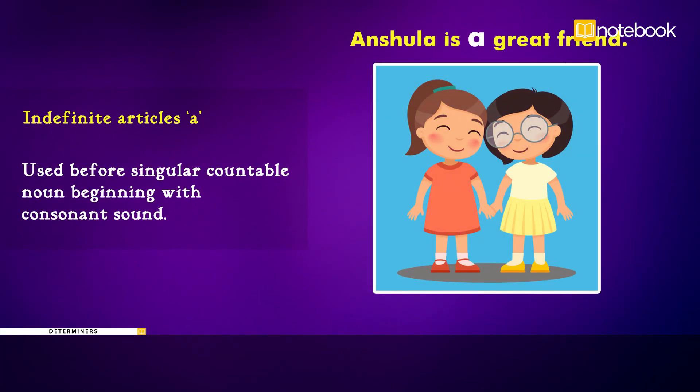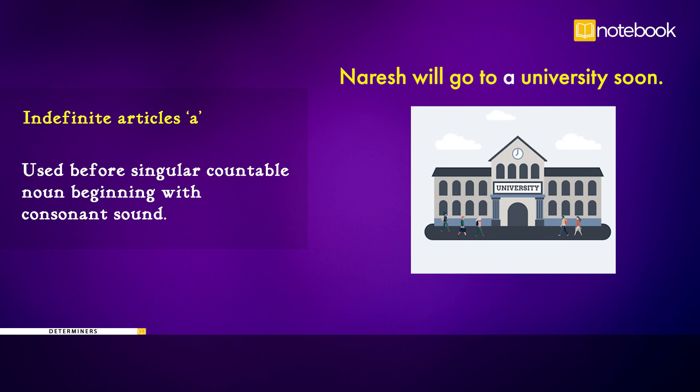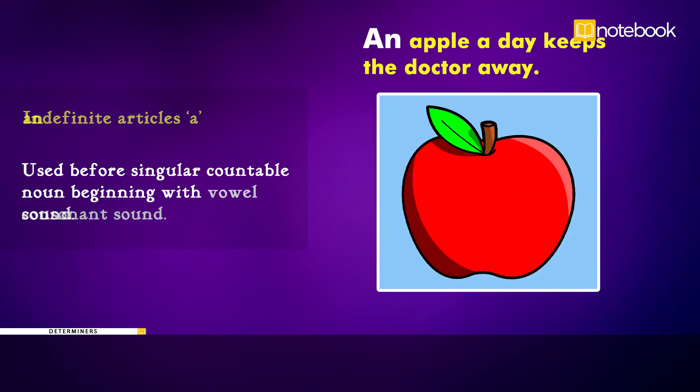Articles. Indefinite articles are used before a singular countable noun beginning with a consonant sound. Examples: Anshula is a great friend. Naresh will go to a university soon.